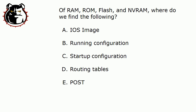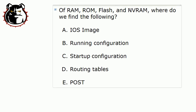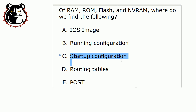The running configuration is found in RAM, where your startup configuration is found in NVRAM. Remember the difference between those two — what NVRAM stands for? That's non-volatile, meaning we don't lose it when we reload the router or the switch. But RAM, we are going to lose that. So you'll lose your running configuration when you restart, but you will not lose your startup configuration file.